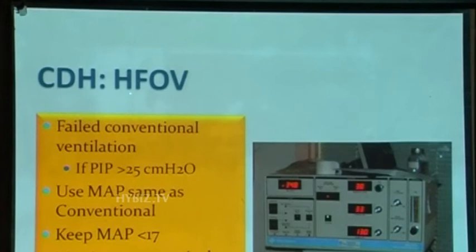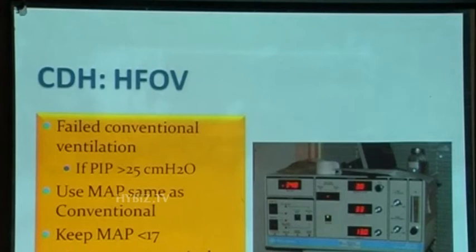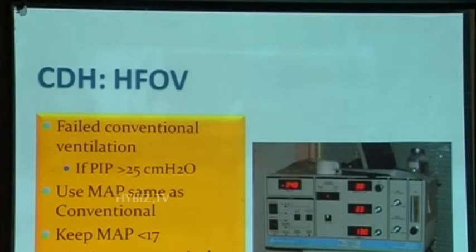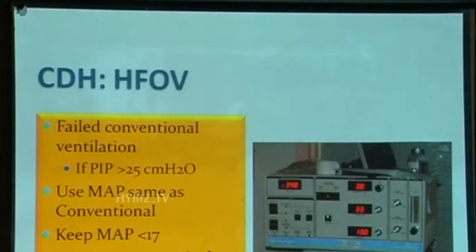When do you go to high frequency ventilation? If you can't manage with a PIP of 25, then you need to switch. One crucial point: normally when converting from conventional to high frequency you increase mean airway pressure by about 5 to 6. But in CDH, do not increase it — start your mean airway pressure on high frequency at the same level as on conventional, and keep it no more than 17. High inflation causes more problems. Initial studies showed high frequency didn't make much difference, but retrospective data suggests some survival improvement.